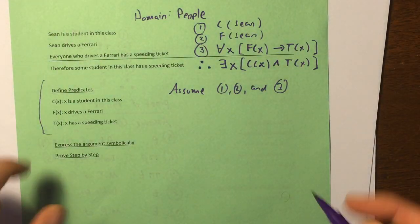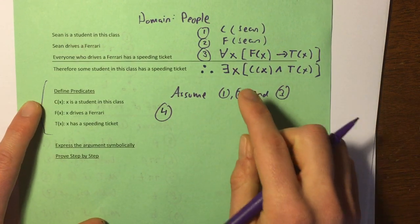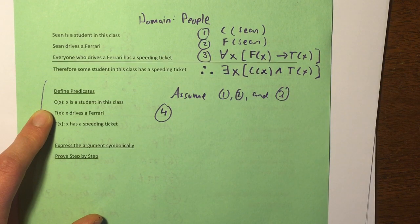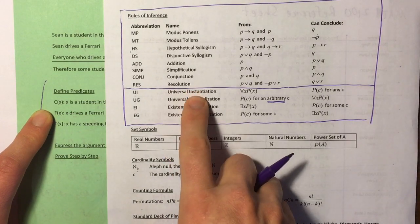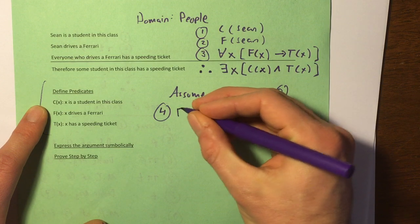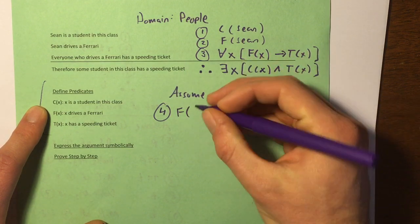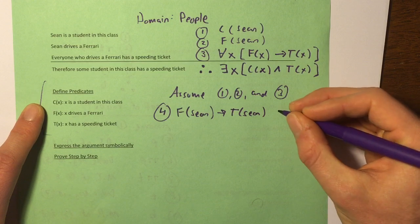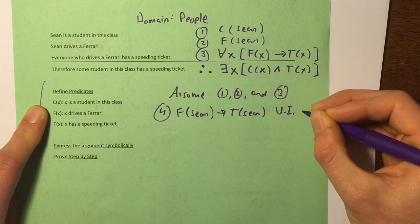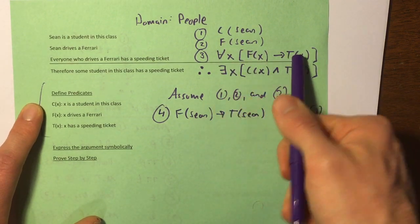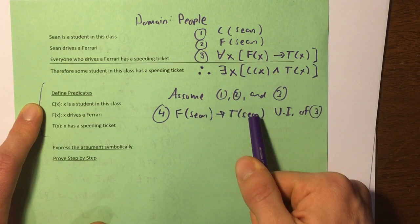I'm going to show you how to use them. In this case, the first thing we want to do is take premise three and instantiate it. We're going to use universal instantiation, instantiating it with Sean. So we can write: F of Sean implies T of Sean. That is a universal instantiation of number three. We're saying for all people, if they drive a Ferrari, then they have a speeding ticket — now we're saying Sean drives a Ferrari, therefore Sean must have a speeding ticket.